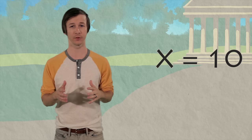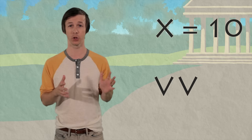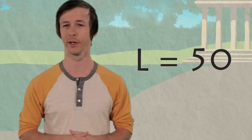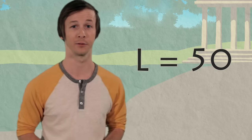The letter X stands for the number ten. You can remember this one because if you take two Vs, you can make an X by putting them like this or like that. The letter L stands for the number fifty. I don't really have a trick for that one, so you're just gonna have to remember it.